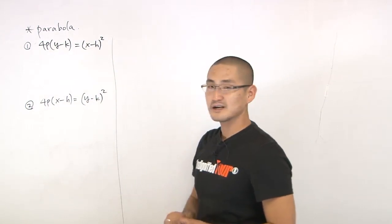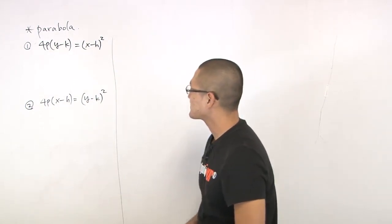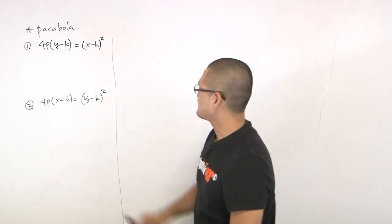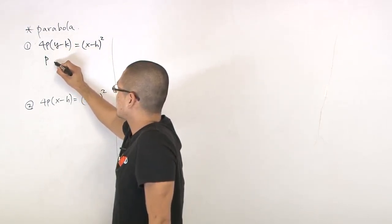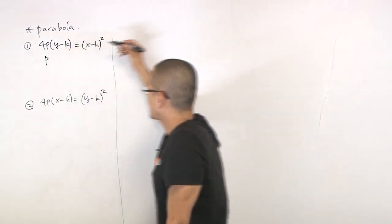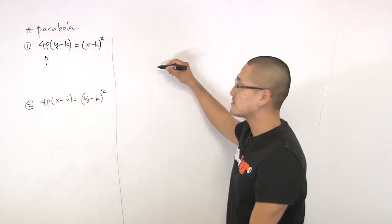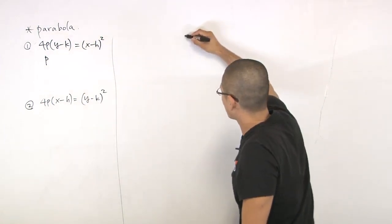So what does the P tell you? P is the one that's telling you that it's away from the focus of the parabola. So let me just express it this way.